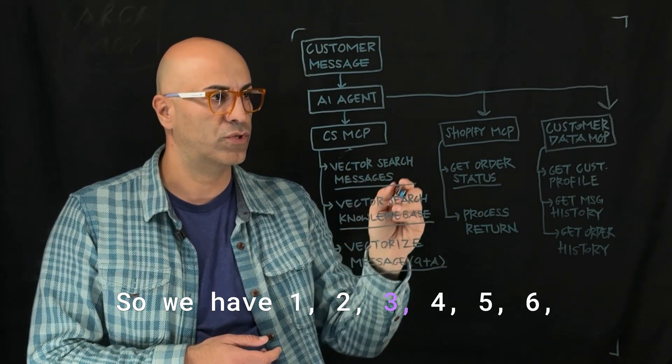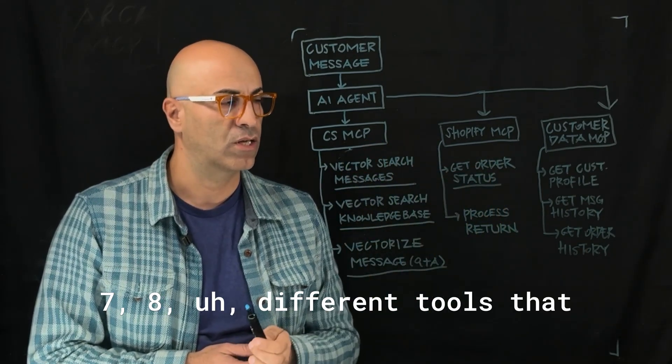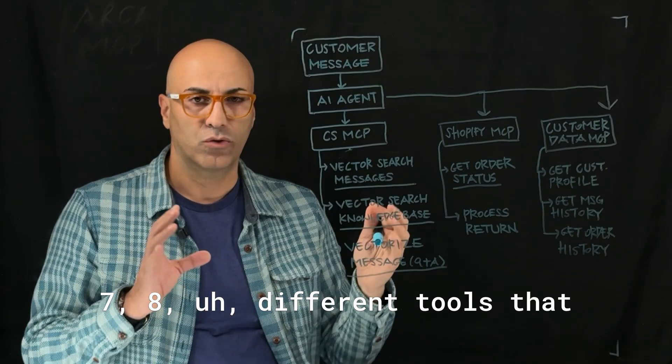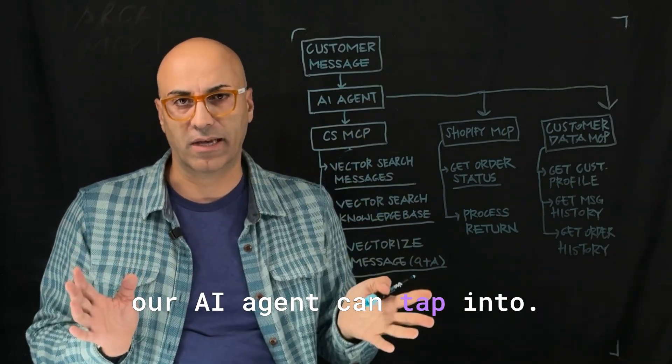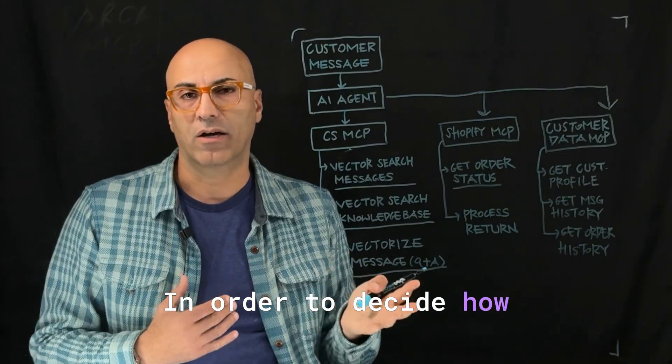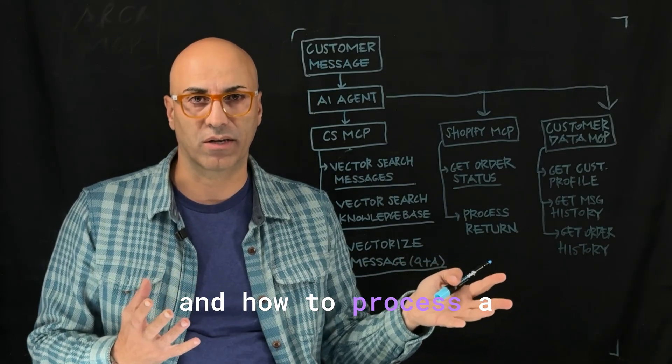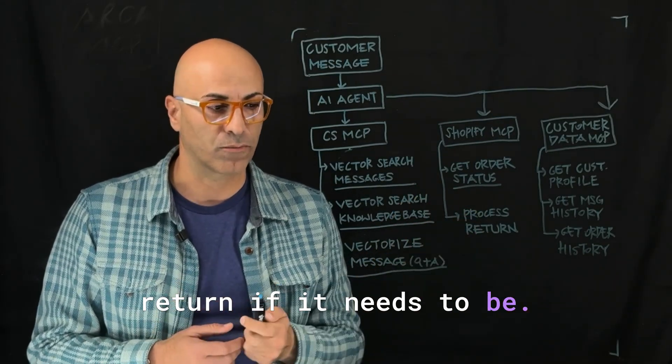So we have one, two, three, four, five, six, seven, eight different tools that our AI agent can tap into in order to decide how to answer this question and how to process a return if it needs to be.